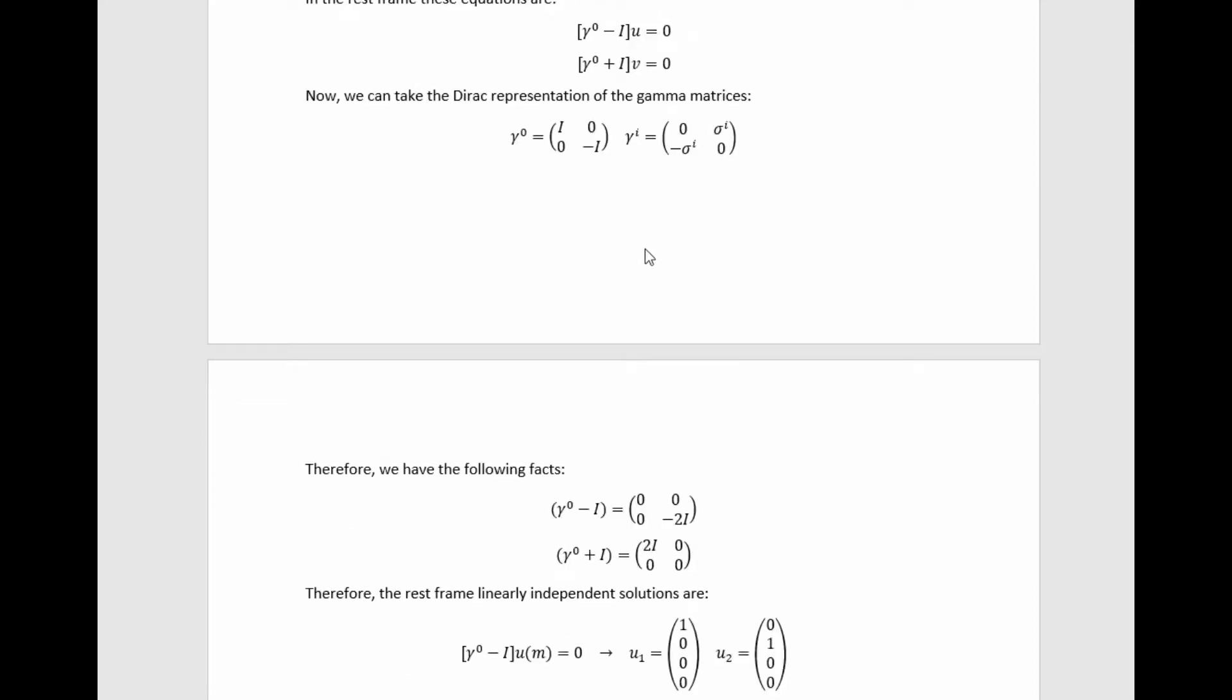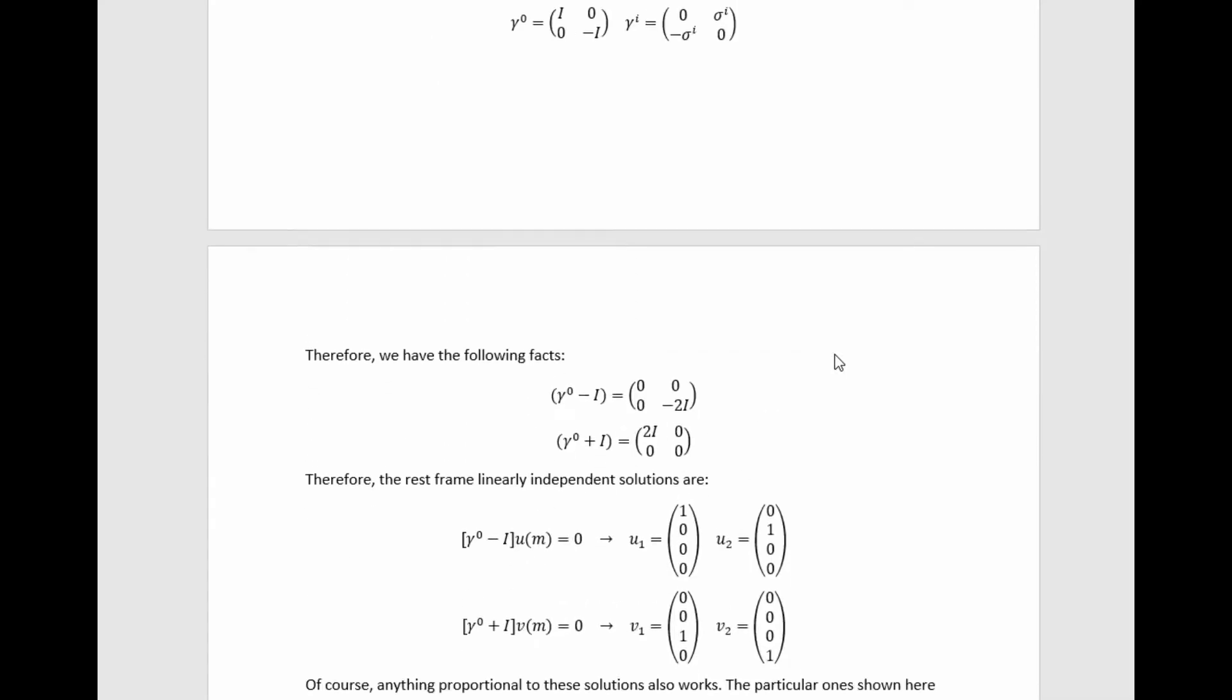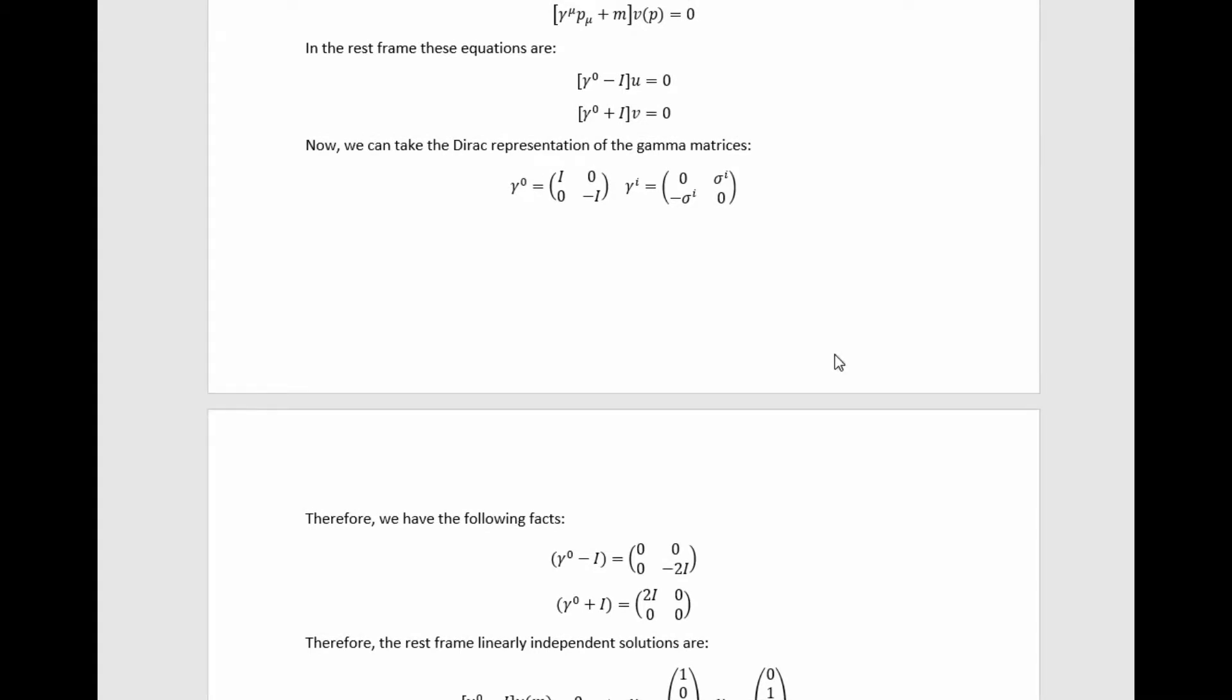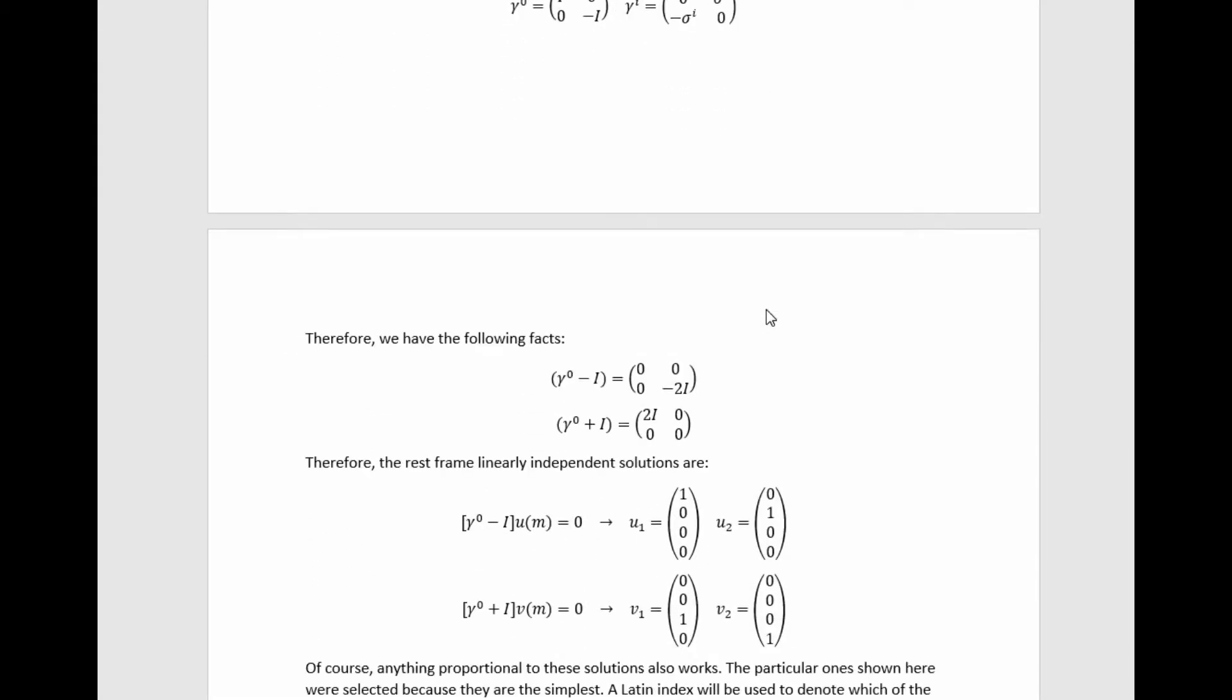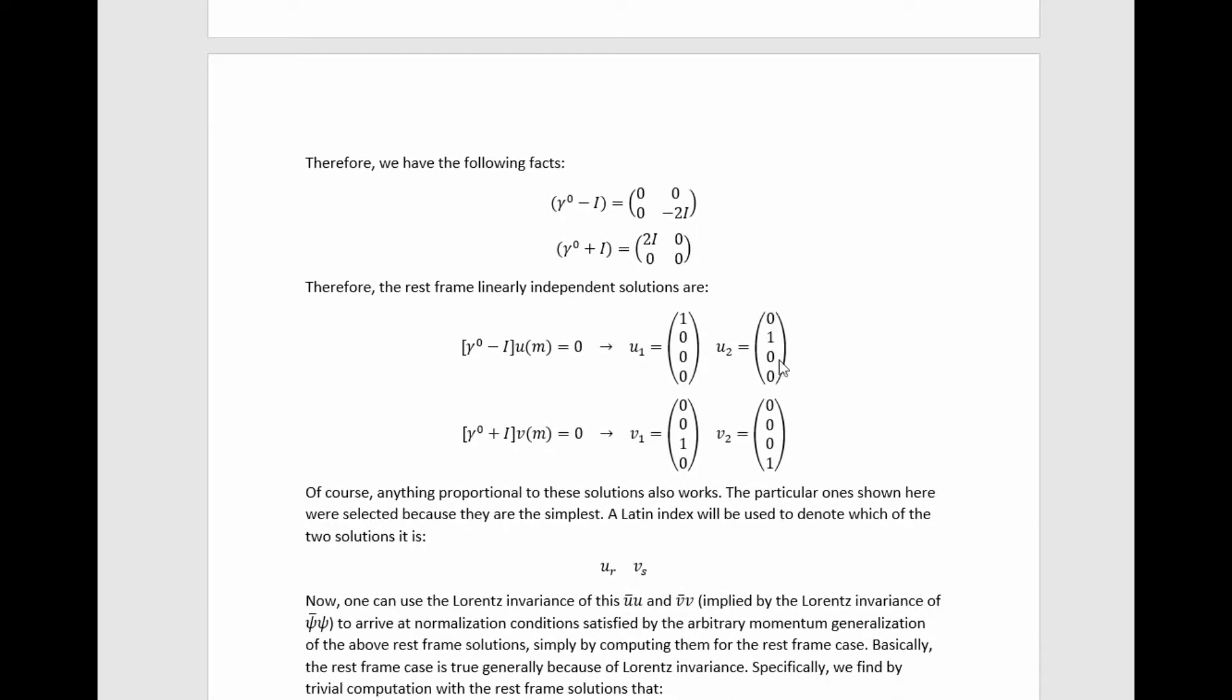With this representation, we find that these operators on these vectors we're trying to solve for simplify down to this, which makes it immediately clear that there are two linearly independent solutions to each of these equations, which can be simply expressed in this way.